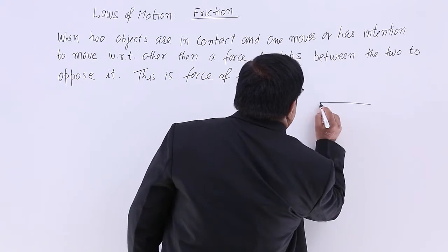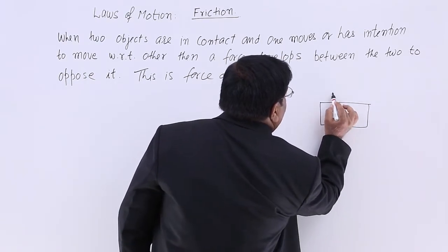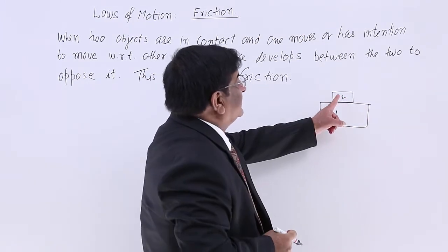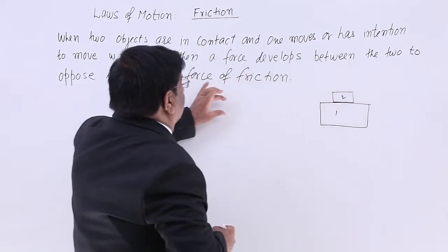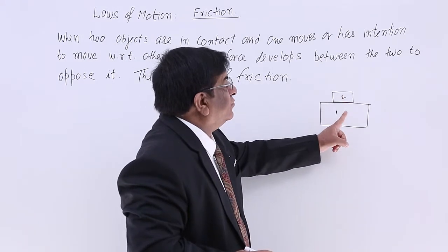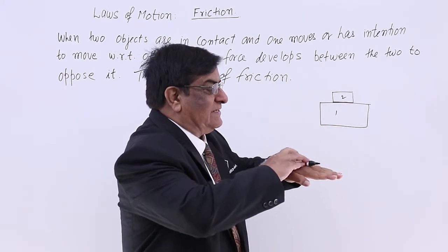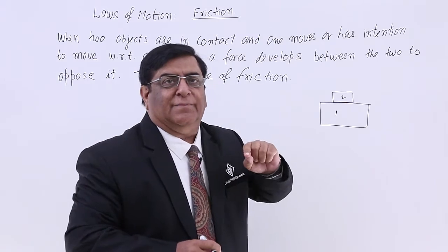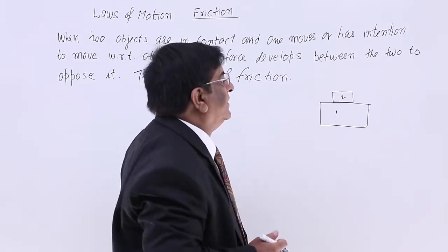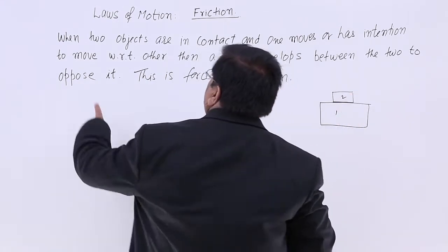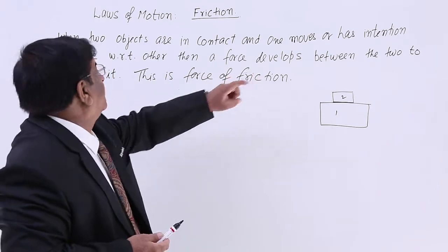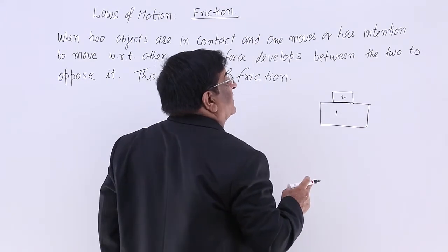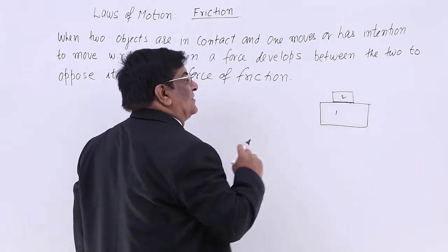There are two objects in contact. One is trying to move with respect to the other — not both moving together, but one moving relative to the other. Even if it is not moving but has an intention to move, a force develops between the two at the contact point.